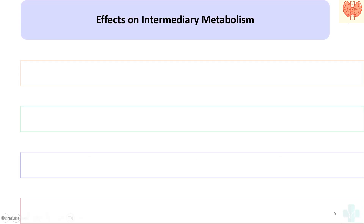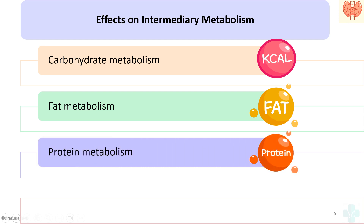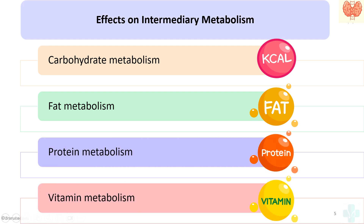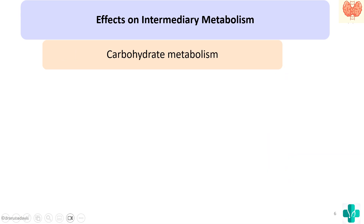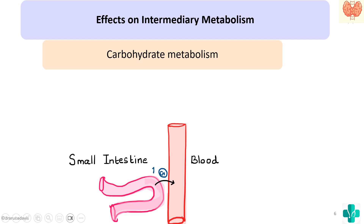The next is intermediary metabolism, which covers effects on carbohydrate metabolism, fat metabolism, protein metabolism, and vitamin metabolism. In carbohydrate metabolism, the thyroid hormone wants to increase the amount of glucose in the blood. It will increase the glucose reabsorption from the small intestine so that there can be increased glucose in the blood.